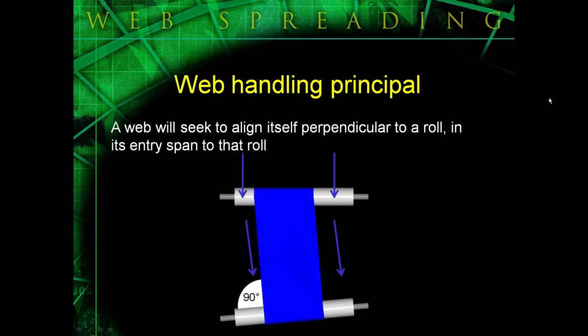One of the things I'll refer to often during this presentation is the web handling principle. The web handling principle basically states that a web will seek to be at a 90 degree angle to a roll in its entry span to that roll.